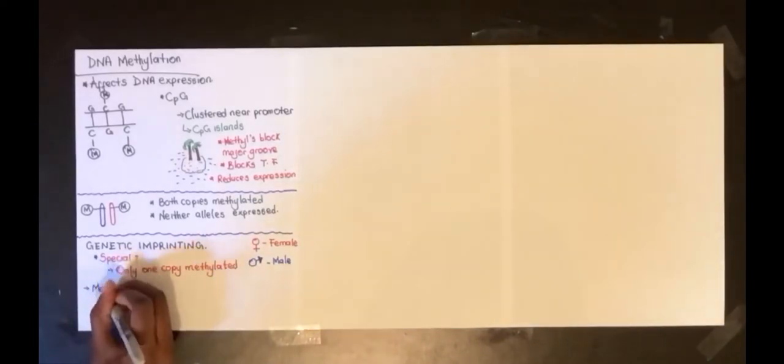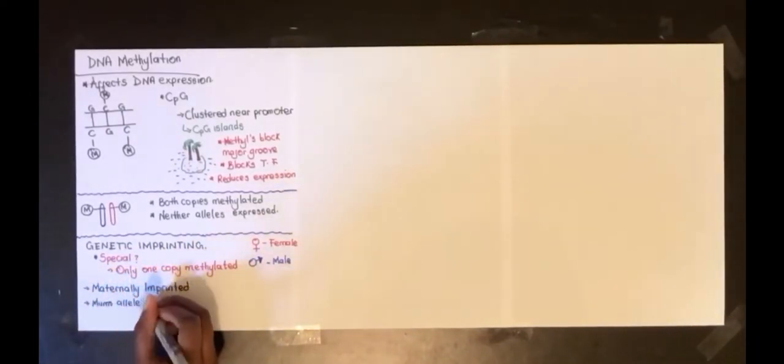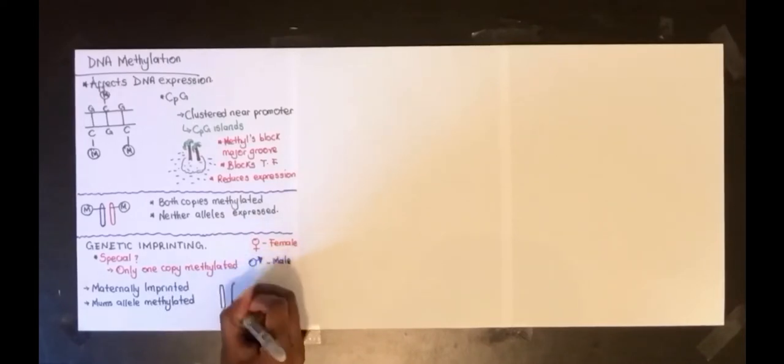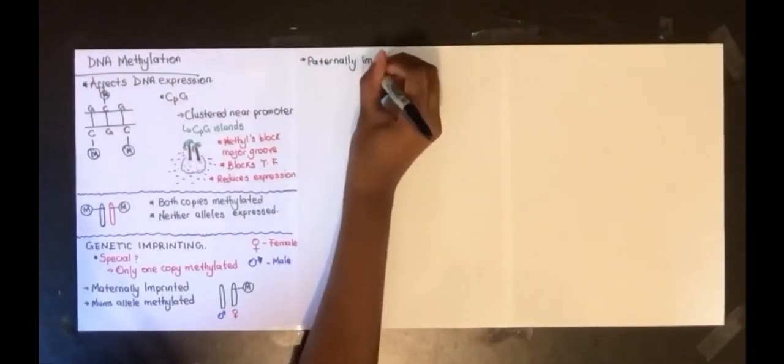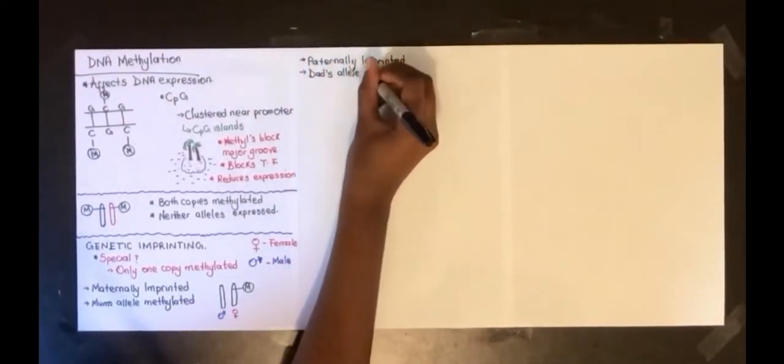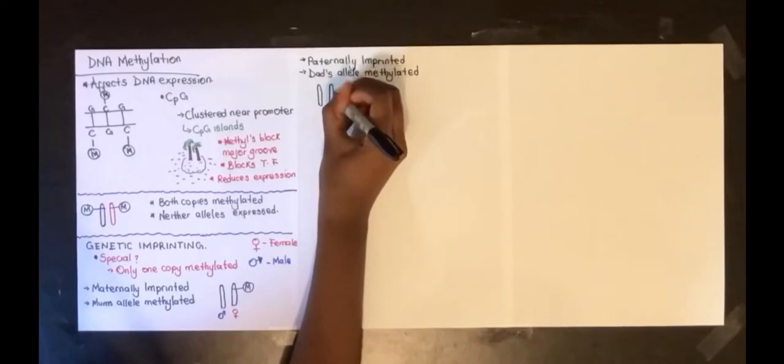When the copy gotten from mom is methylated, it's known as a maternally imprinted gene. The methyl group would be on the allele that comes from mom, and the allele from mom won't be expressed. Instead, the allele from dad would be expressed. The same goes for paternally imprinted genes—the allele from dad would be methylated and won't be expressed, which means that the copy from mom will be expressed.